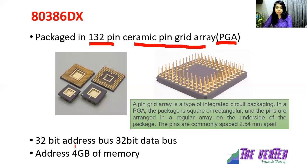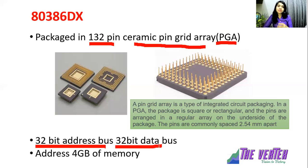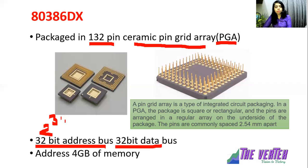The 80386 is 32-bit. It has a 32-bit address bus and a 32-bit data bus. Since there is a 32-bit address bus, it can address 2 raised to the power 32 memory locations, which means it can address 4 GB of memory.